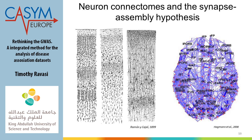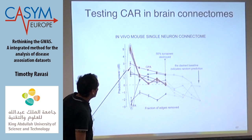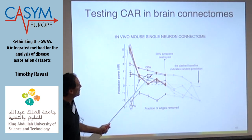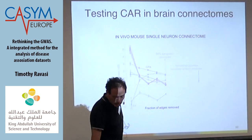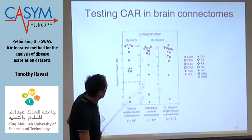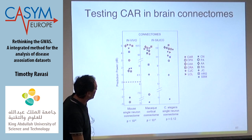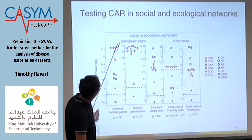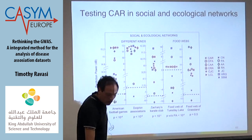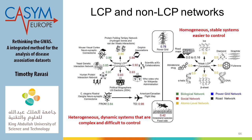We asked: can we find local community structure there, and can we predict links between neurons? To cut a long story short: our predictor works better than others, particularly when you sparsify the network. We tried this on different neuron cortical brain networks and also social networks. The CAR and adjusted CAR index perform better — specifically better in sparse conditions.